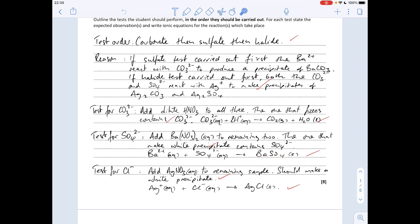And then finally the test for the chloride. So you've got one sample left, you'd add silver nitrate solution and that should make a white precipitate which confirms the presence of the chloride and there's the ion equation for that.